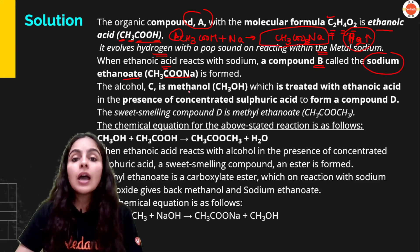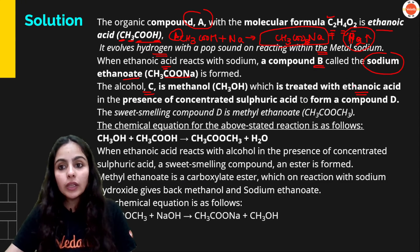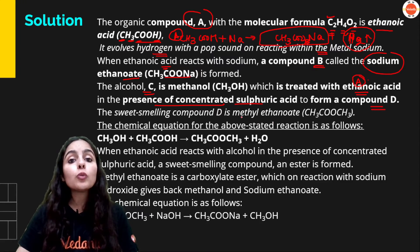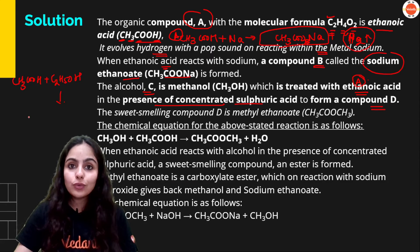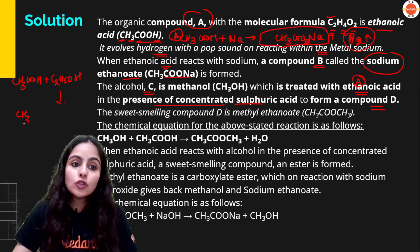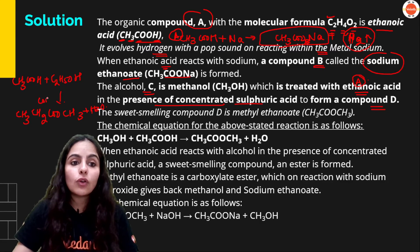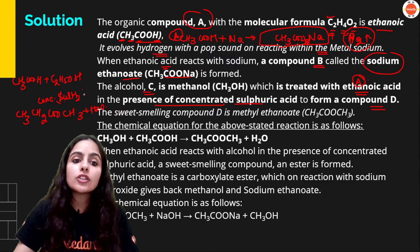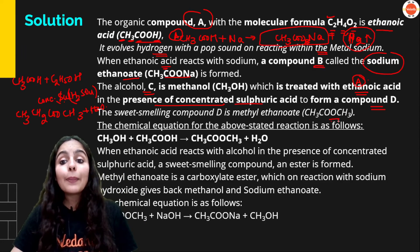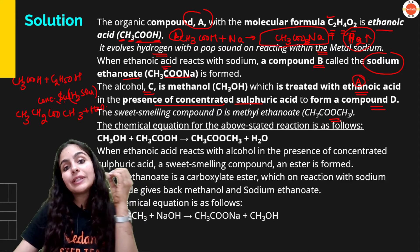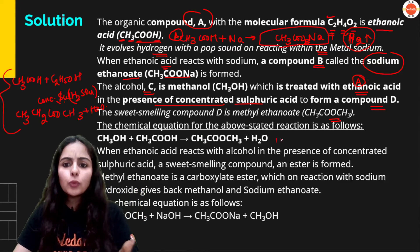Now when ethanoic acid reacts with sodium, that forms compound B which is called sodium ethanoate. Ab ye kaha hai ki ethanoic acid A ko, agar hum alcohol C ke saath react karate hai, in presence of concentrated sulfuric acid, aapko milta hai compound D. So basically CH3COOH plus C2H5OH. Alcohol aur ethanoic acid jab bhi akkar aate hai, toh that will form an ester. So this reaction is esterification reaction.